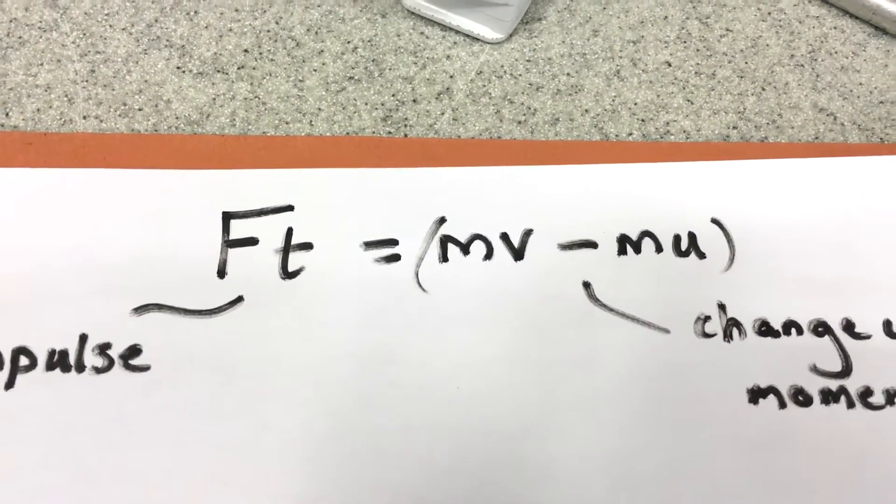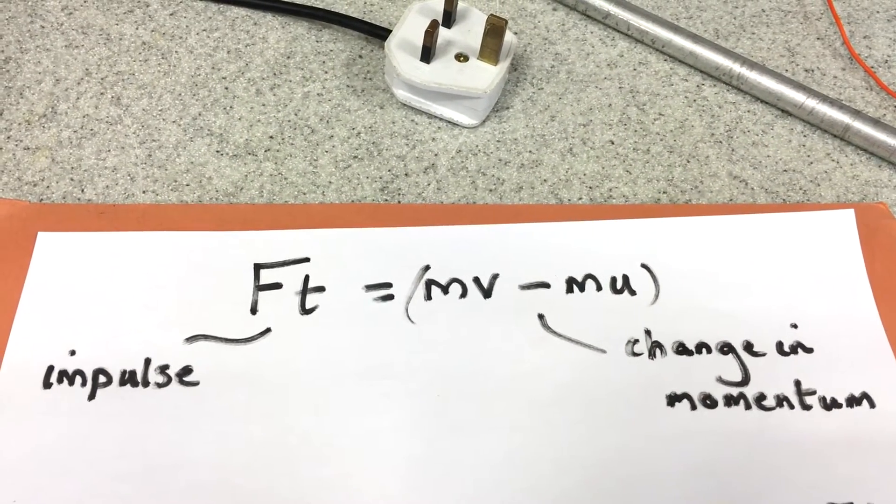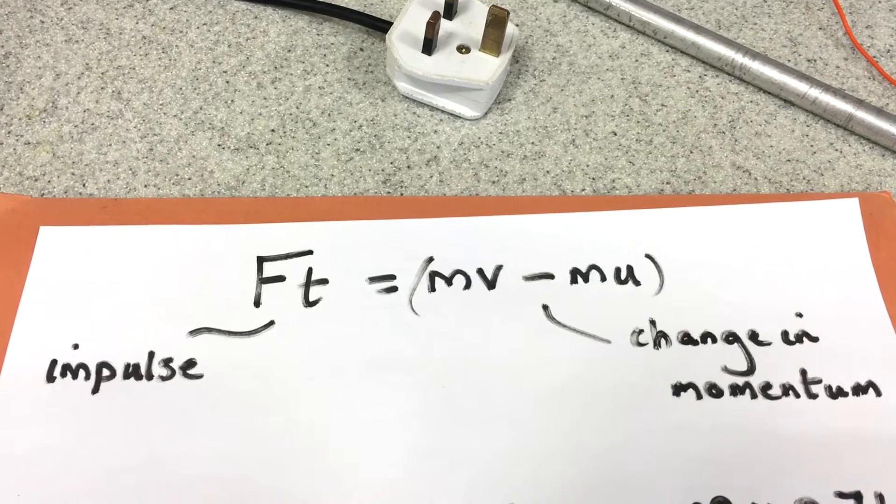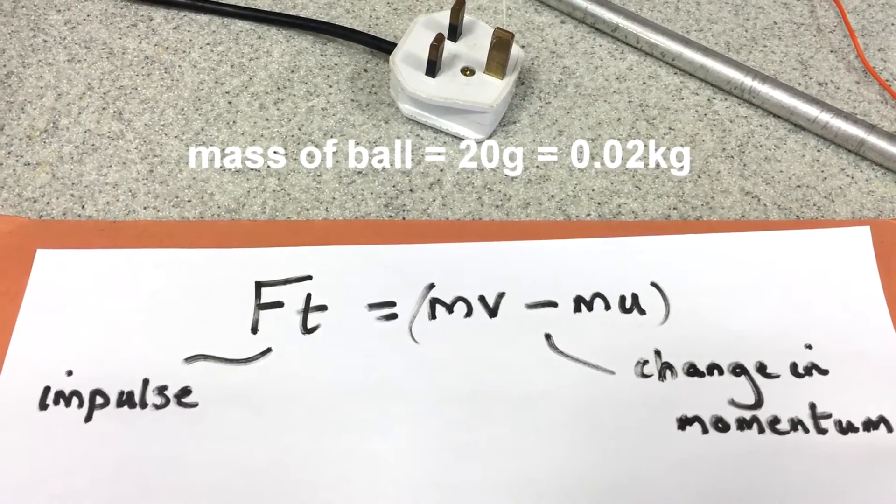Here's our equation. F·t equals mv minus mu. The impulse equals the change in momentum. The initial momentum on the ball was zero because it was stationary. So mu disappears. F·t equals mv.